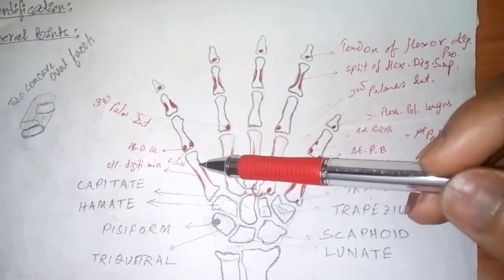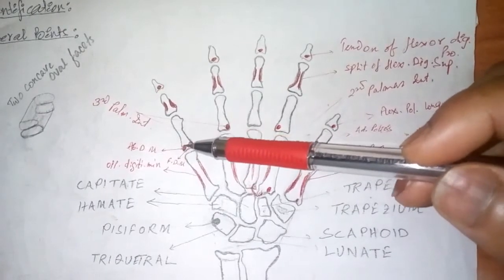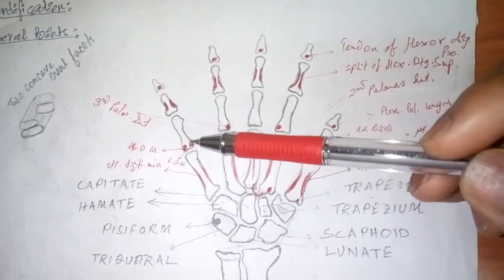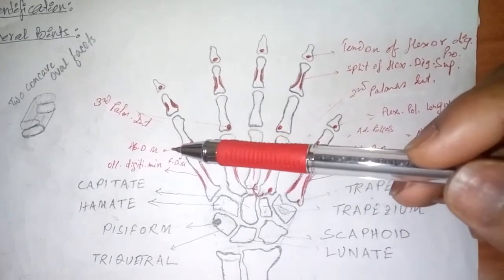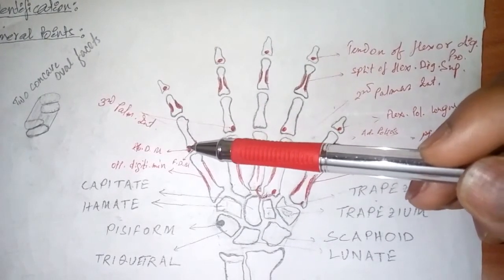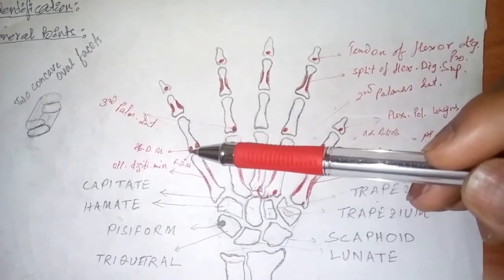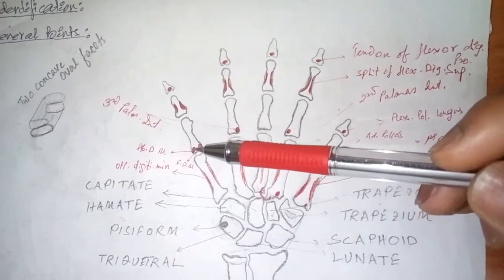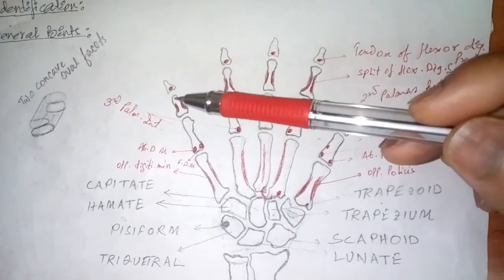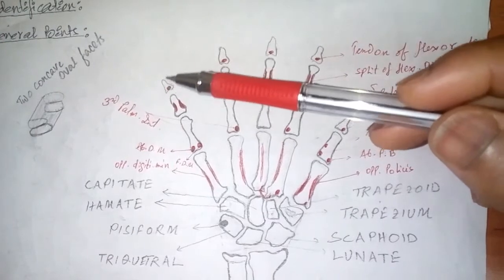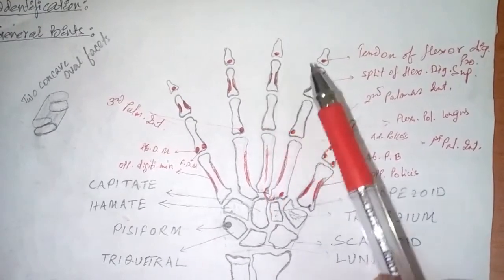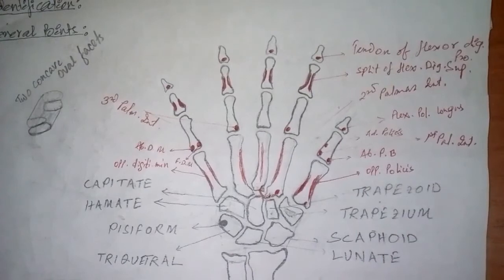And the fifth digit has insertions of two important muscles. On the palmar surface of the base, on the lateral side, is the flexor digiti minimi, which flexes the fifth digit. And on the medial side of the palmar surface of the base of the proximal phalanx of the fifth digit is the abductor digiti minimi, which abducts the fifth digit. The middle and distal phalanges have the same attachments as in the second, third, and fourth digits. That is all about the phalanges on the palmar surface.